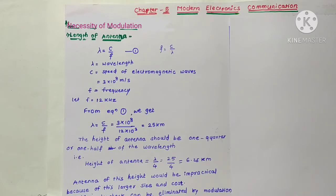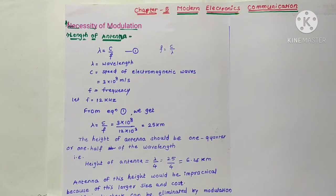Low frequencies range from 30 kHz to 300 kHz, then medium frequencies, high frequencies, very high frequencies, ultra high frequencies, super high frequencies, and extremely high frequencies with a range of 30 GHz to 300 GHz. Infrared and the visible spectrum light are also part of the different frequency ranges available in modern electronic communication.